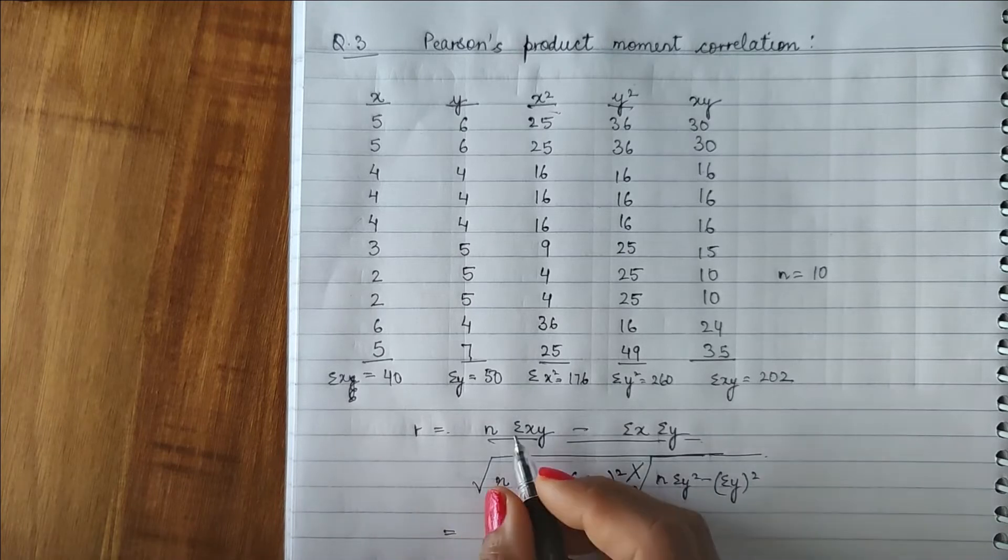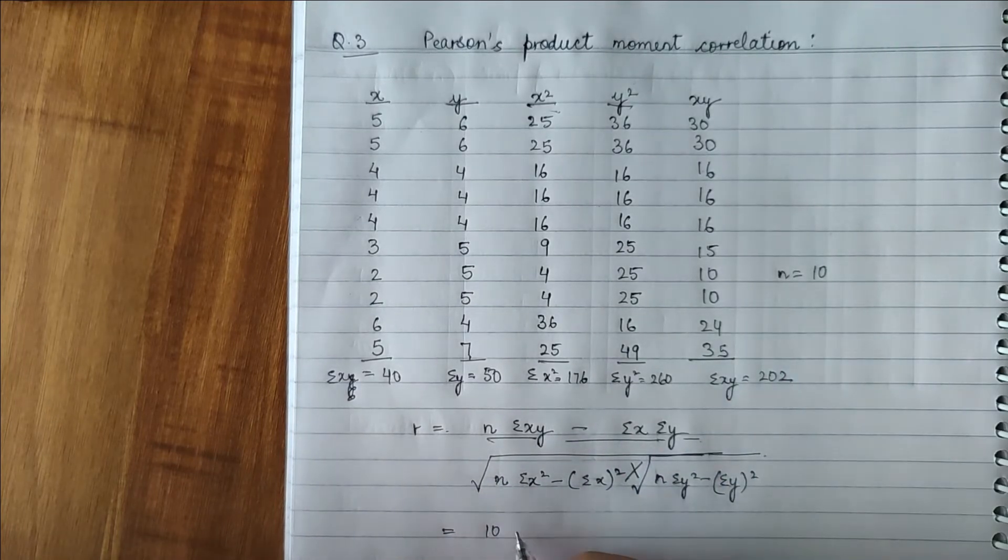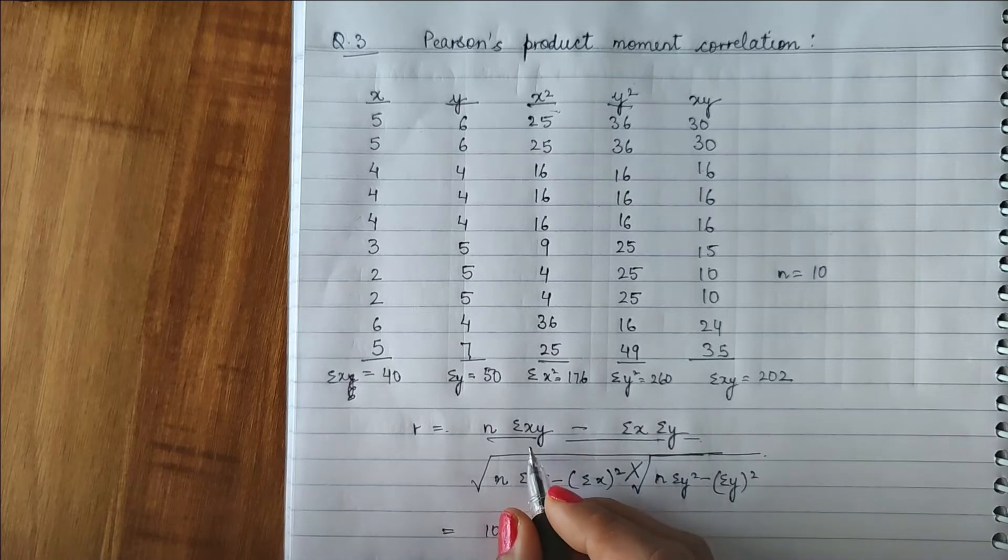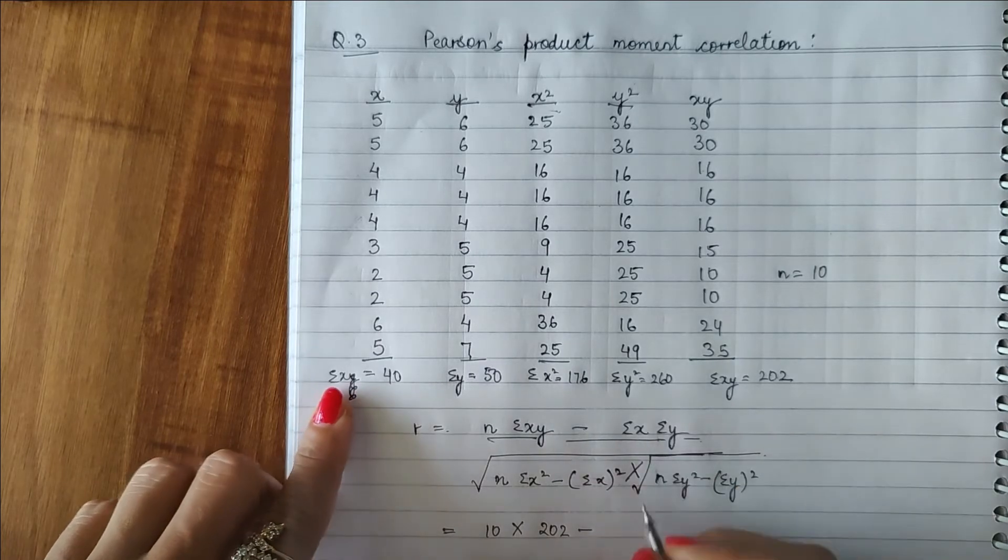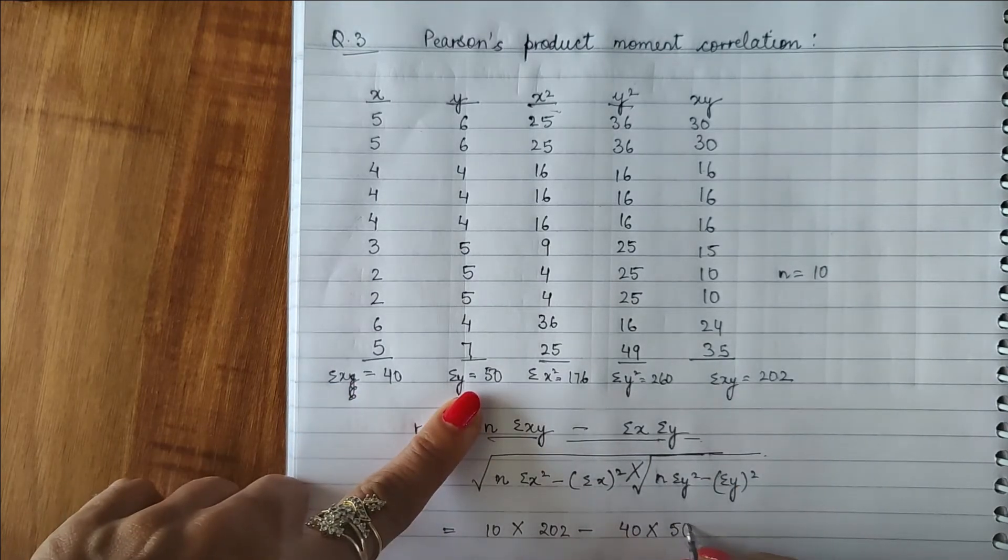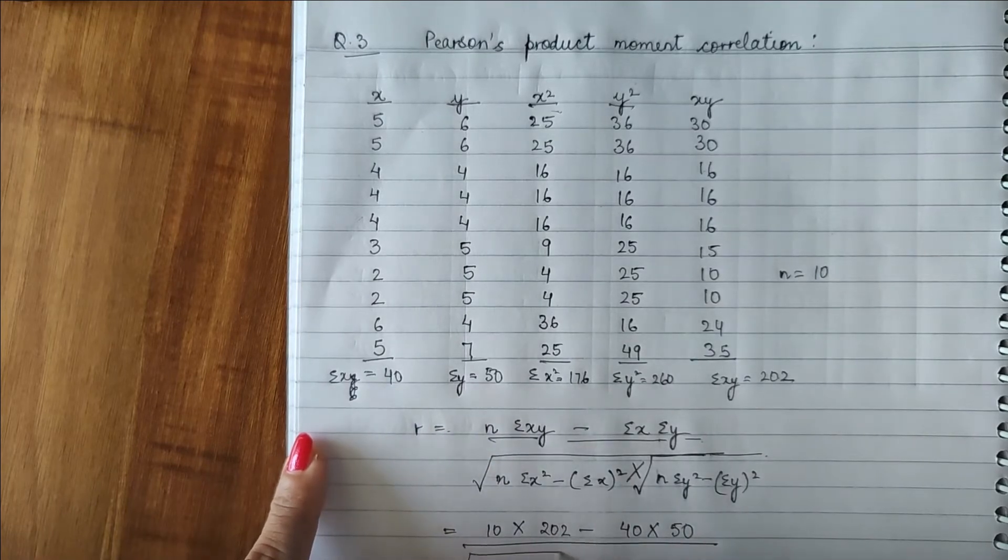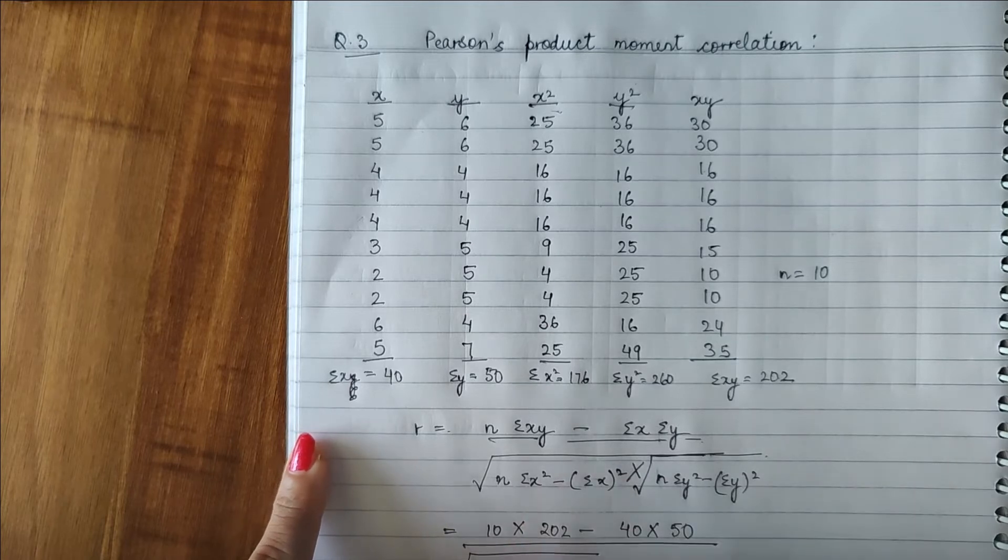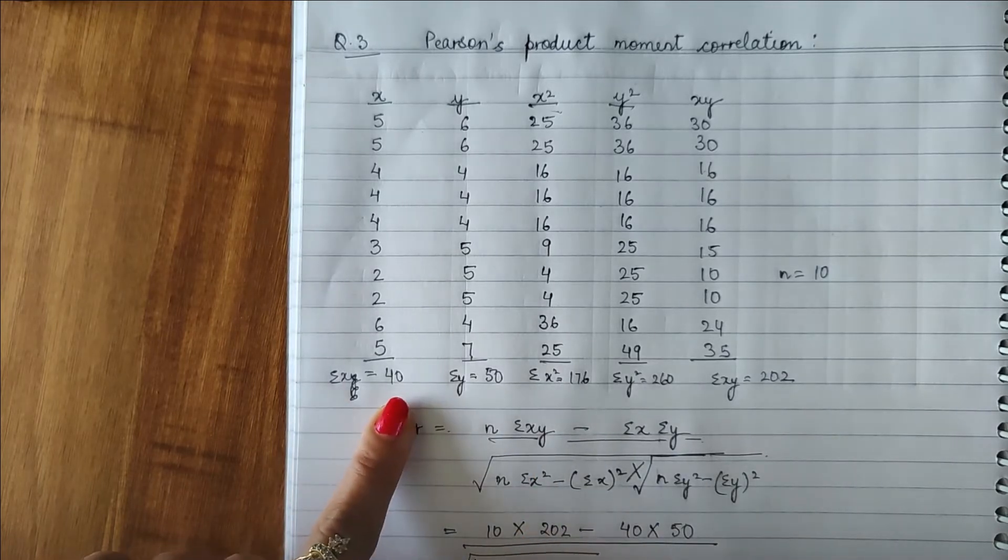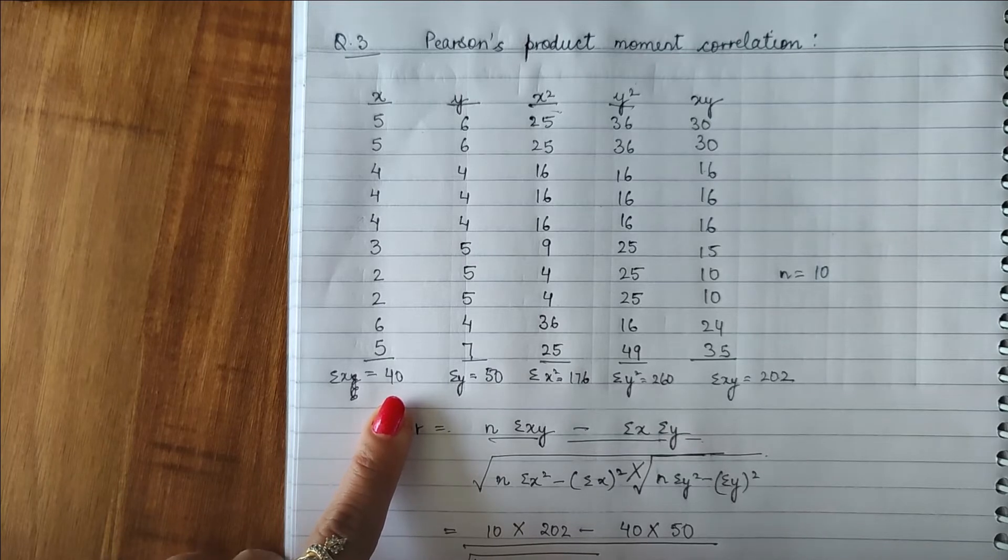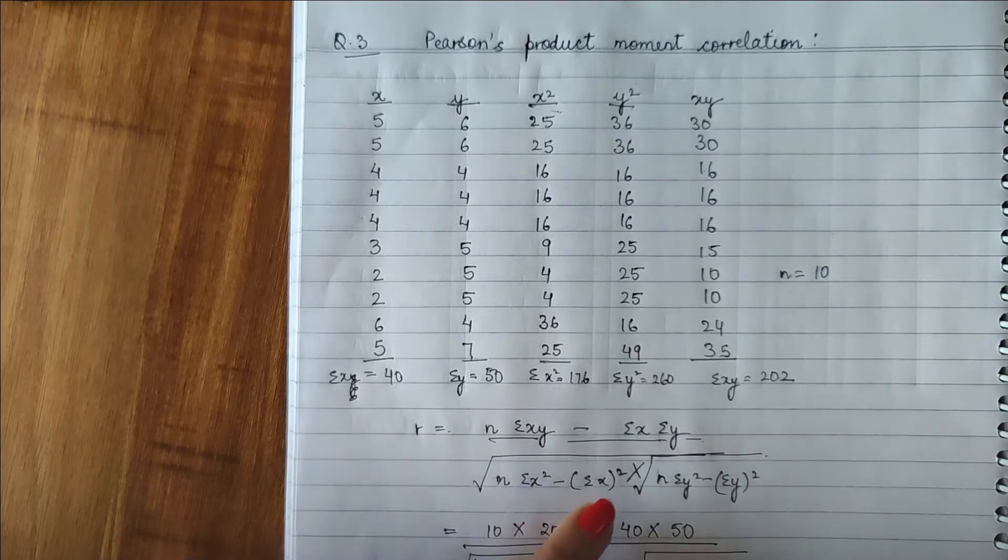Now I will put the values here. N is 10 multiplied by summation of XY. So it is 202 minus summation X, 40 multiplied by summation Y, 50 upon under the root 10 multiplied by summation X square, 176 minus summation X squared. Summation X squared means 40 square, right. So another under root we will put the values.